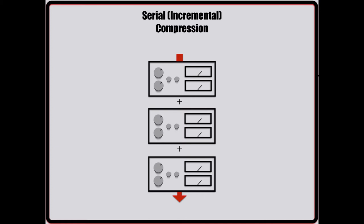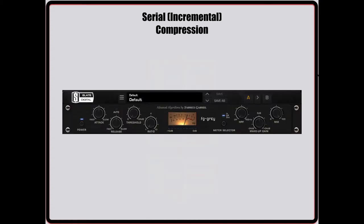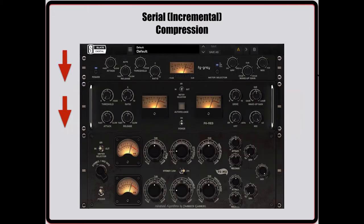What this allows you to do is make many small and detailed dynamic adjustments to the source as to progressively apply the dynamic processing. Serial compression allows you to spread the workload, so instead of using one compressor for all the dynamic processing on a track, you can spread it out over multiple units and further sculpt how the processing interacts with that element.